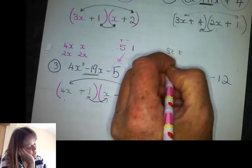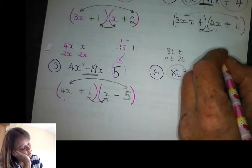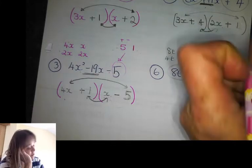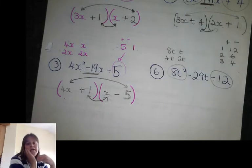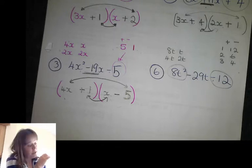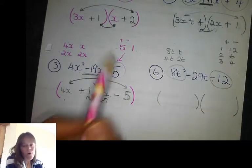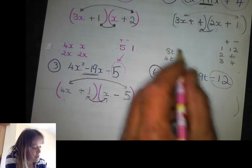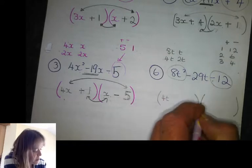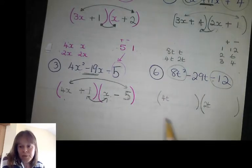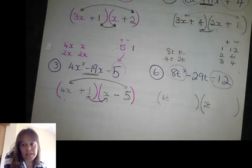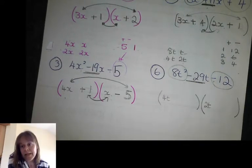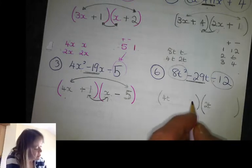Last one: 8t squared — I could have 8t and t, or 4t and 2t. The constant could be one and twelve, two and six, or three and four, and they need to multiply to make negative twelve, so one will need to be positive and one negative. There are a lot of options here. Often the questions they set are more likely to use 4t and 2t than a huge number and a single t, so I'm going to take a punt and start with 4t and 2t — but I might be wrong and need to go through everything.